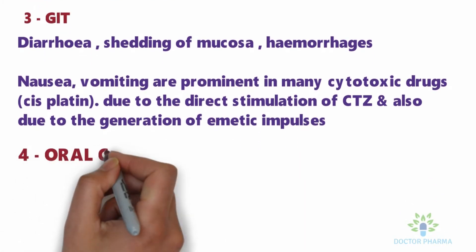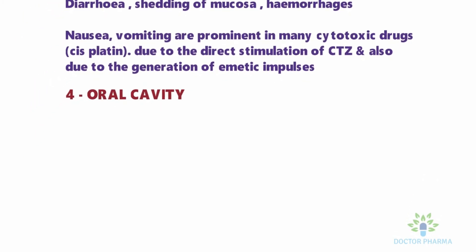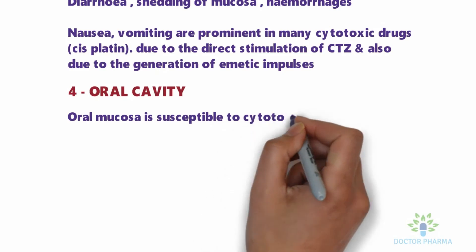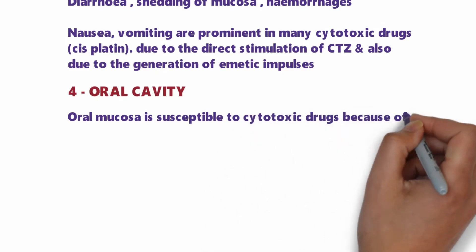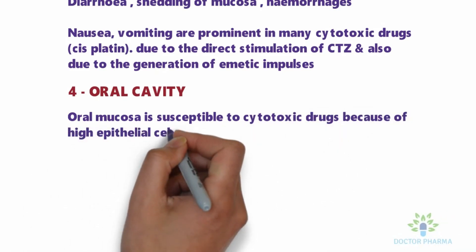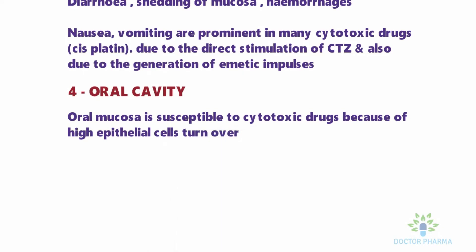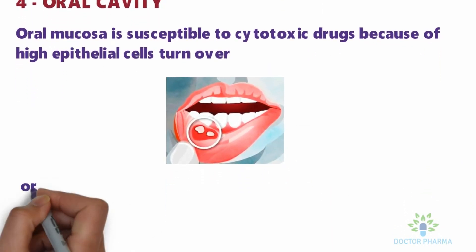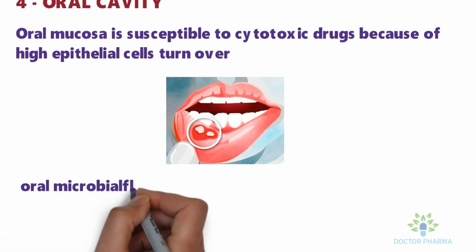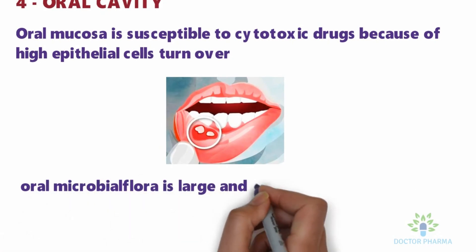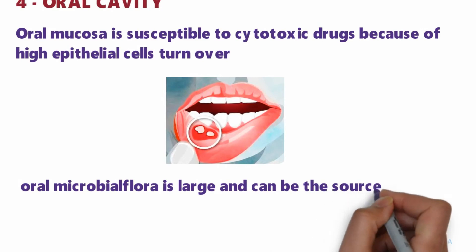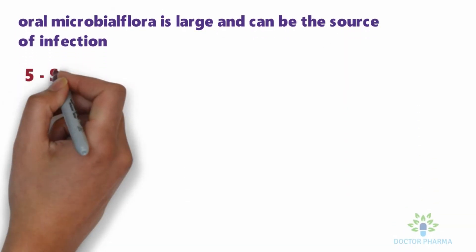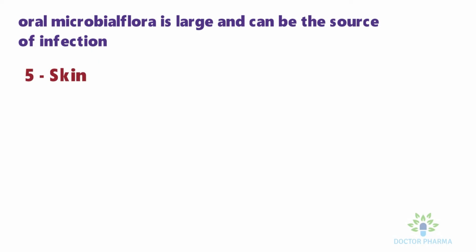The fourth point is toxicity in the oral cavity. The oral mucosa is susceptible to cytotoxic drugs because of its high epithelial cell turnover. Minor breaches and injuries can be observed in the oral mucosa, and the large microbial flora of the oral cavity can be a source of infection.